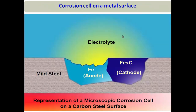Inside any material used in a refinery, there are innumerable micro-level anodes and cathodes. For example, in carbon steel, iron acts as the anode and iron carbide regions act as the cathode. Since metals are good conductors of electrons, no external conductor is needed. The only requirement is an electrolyte — if an electrolyte contacts the material, corrosion will begin.